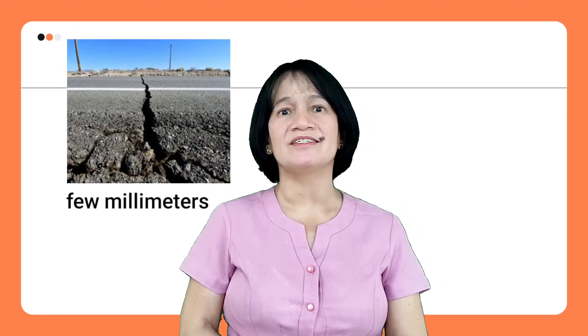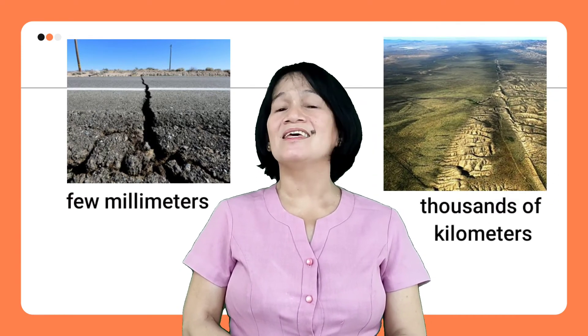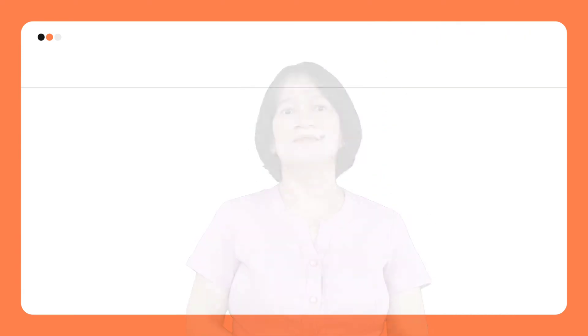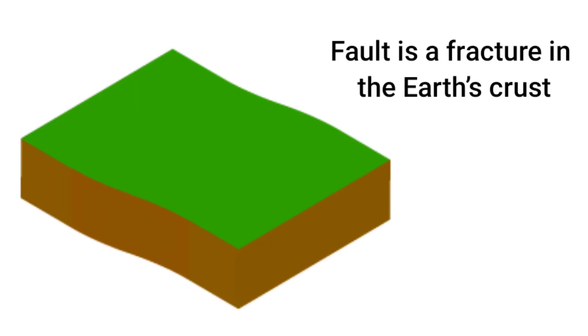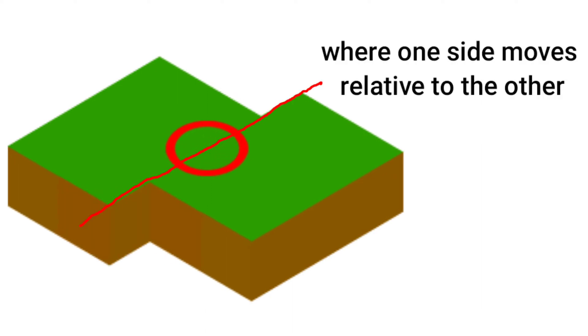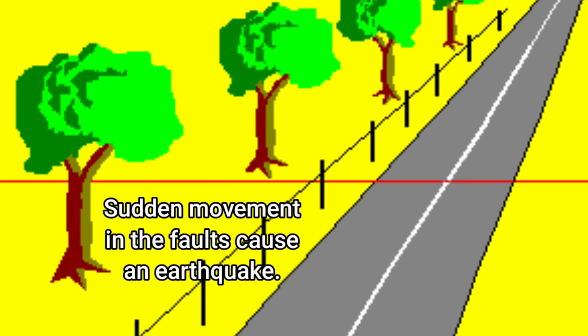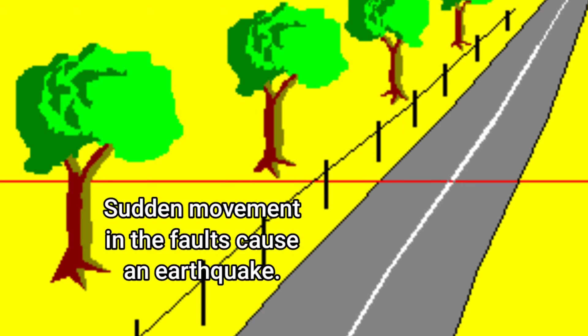Now let's talk about fault. Fault may range in length from 2 millimeters to thousands of kilometers. A fault is a fracture in the Earth's crust where one side moves relative to the other. Sudden movement in the fault causes the earthquake.